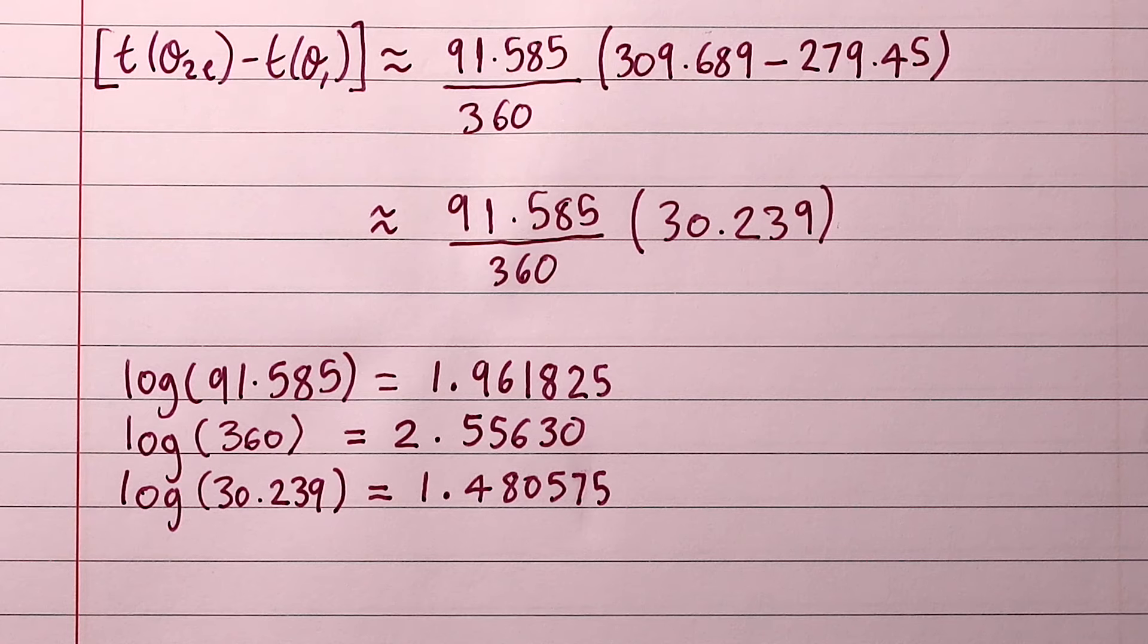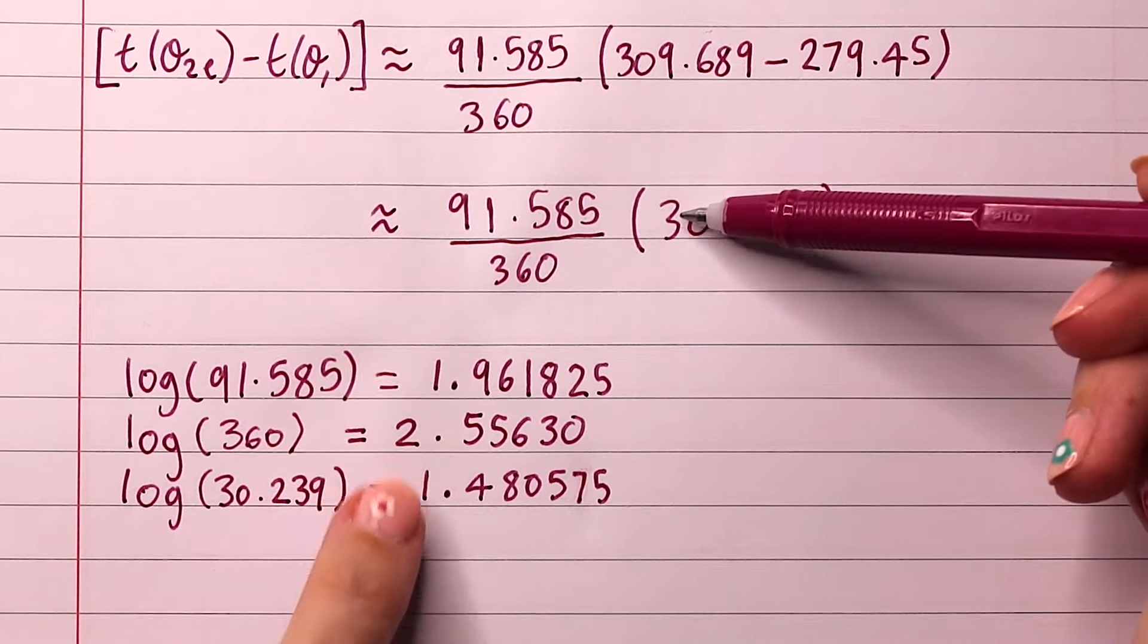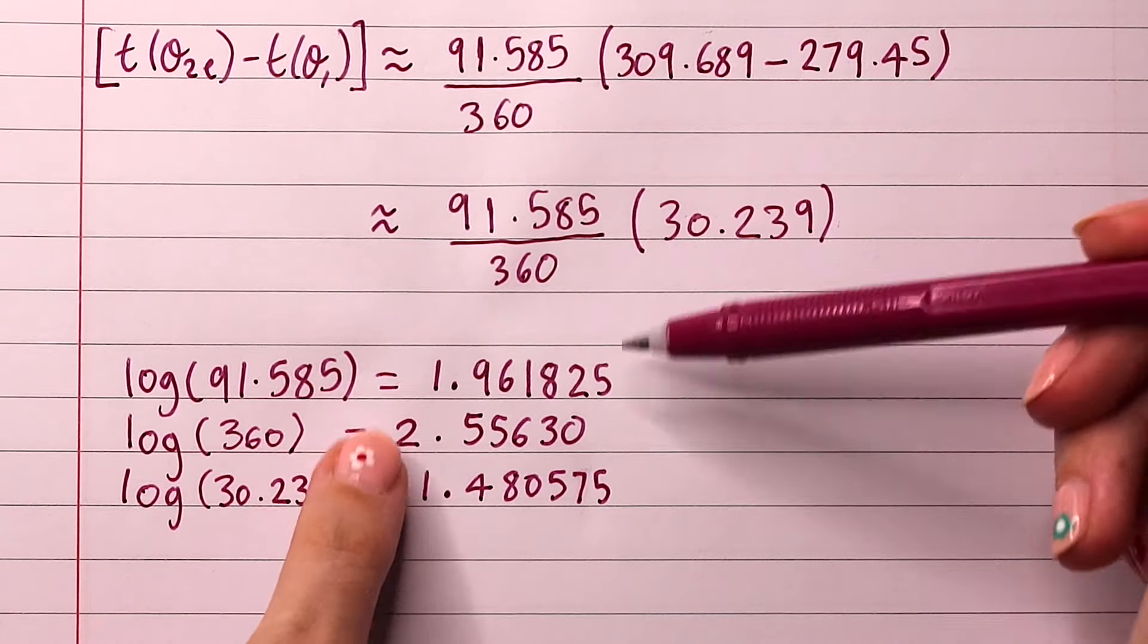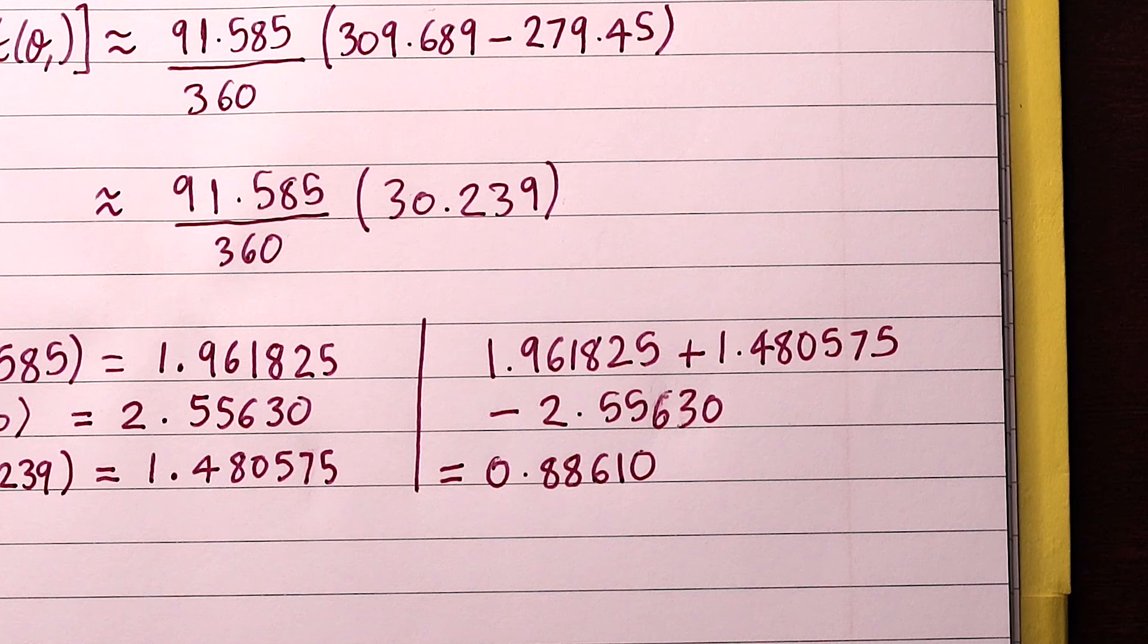But then because we had 91585, we also need to add a 2.5, giving us 961825. Doing the same thing for our other numbers, we end up with the three logarithms that we want. We want to add the logs of these two values since they're multiplied and subtract this one. That gives us 0.88610.